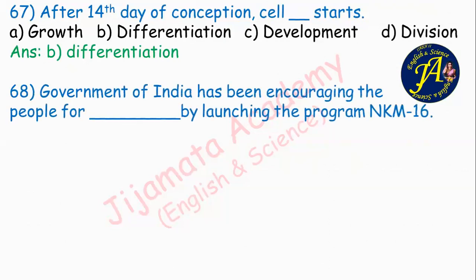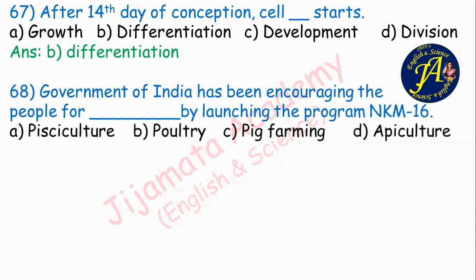The Government of India has been encouraging people for dash by launching the program NKM16. Options are pisciculture, poultry, pig farming, apiculture. Correct answer is option A: pisciculture.